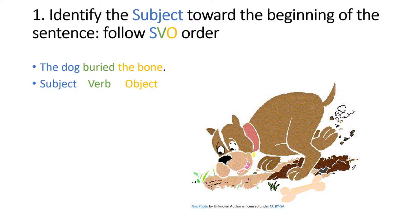Guideline 1: Identify the subject toward the beginning of the sentence. Use subject-verb-object order. English sentences have two main components: the subject, the thing that does something, and the verb, the part of the sentence that says what the subject is or what it does. Many sentences also have a third part, the object, a noun that is acted upon by the subject. The classic English sentence structure is sometimes abbreviated as SVO structure, and a good rule of thumb for writers in English is to follow this pattern.